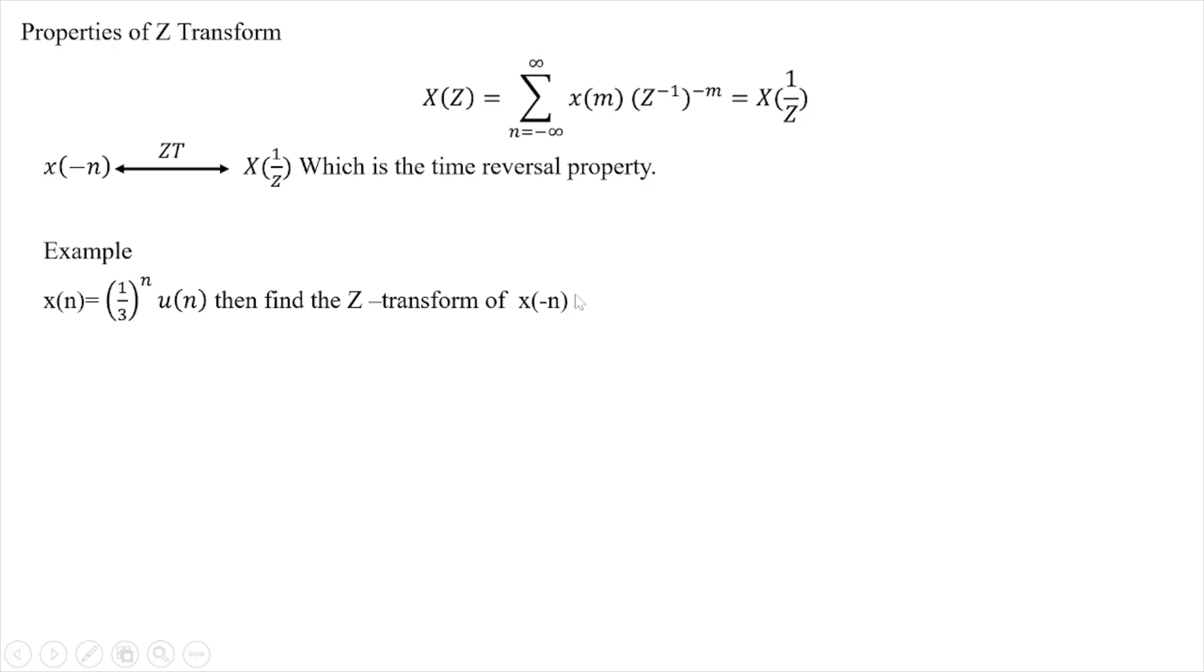The z-transform of the signal x(n) is X(z) equals 3/(z-1) for the given signal.